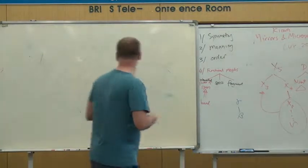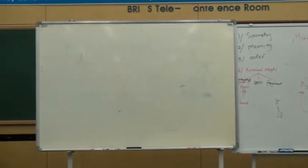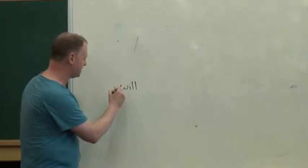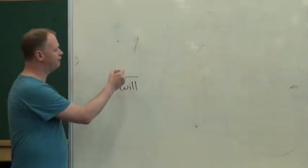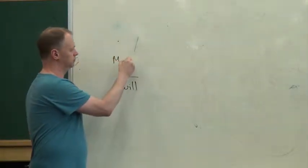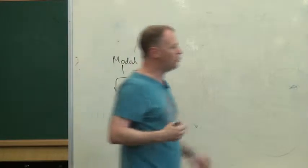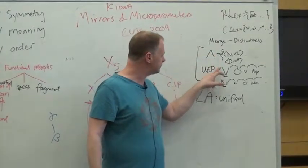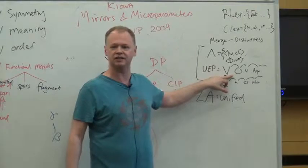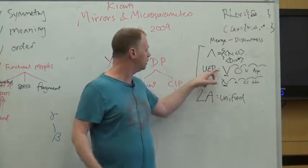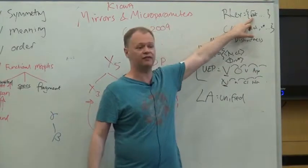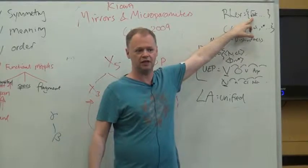We can take something like 'will' in English and say that that is a root, but it's not a verb — it's a modal. What we've essentially done there is said that one of the things that English can do in its lambda, big lambda, is when it's building this thing out of these universal external projections, it can say that in English, modal is a category that can label one of these root elements.